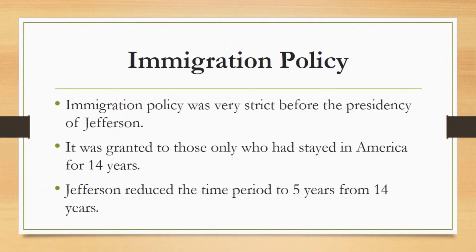Immigration Policy: The immigration policy before the presidency of Thomas Jefferson was quite strict, and immigration was granted to the one who had at least spent 14 years in America. Jefferson reduced the time period of 14 years to 5 years for acquiring US citizenship.